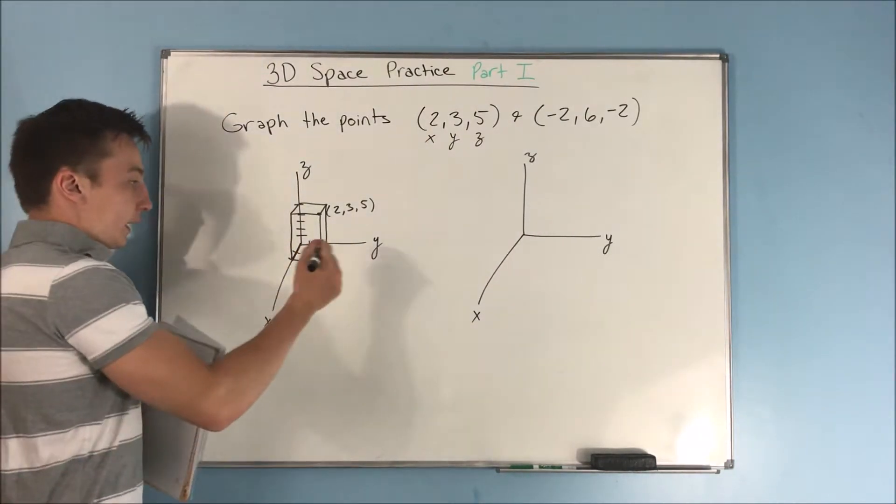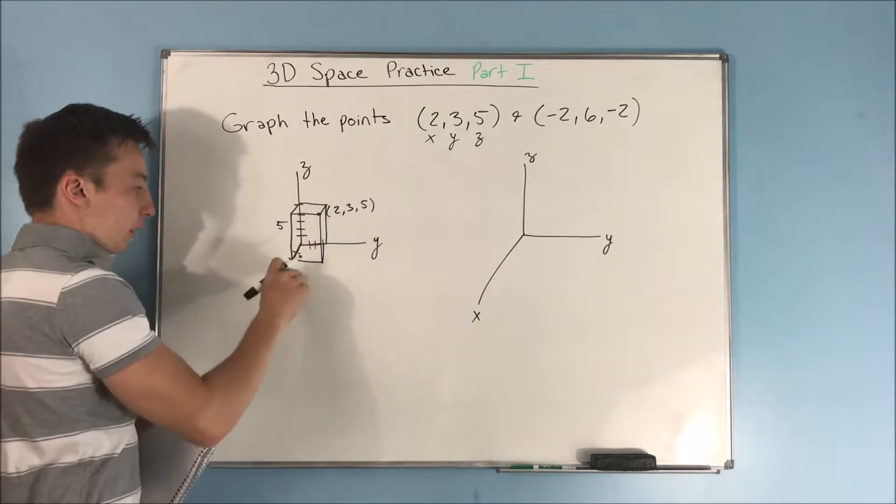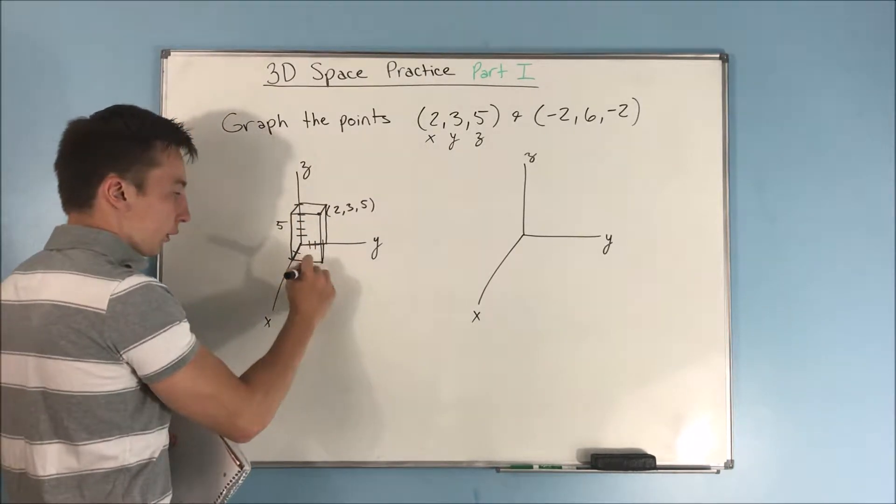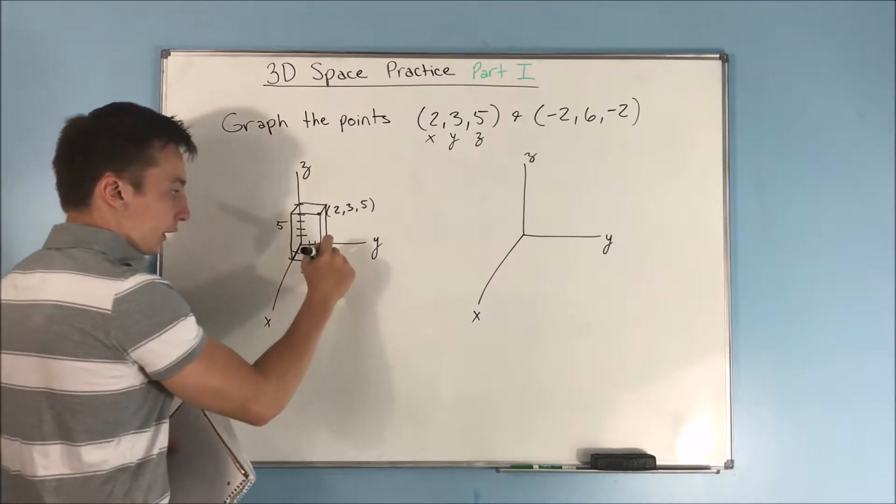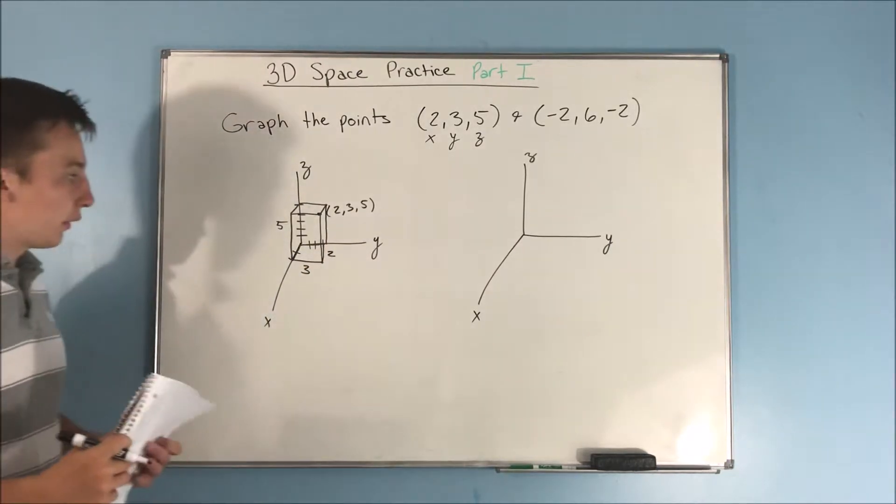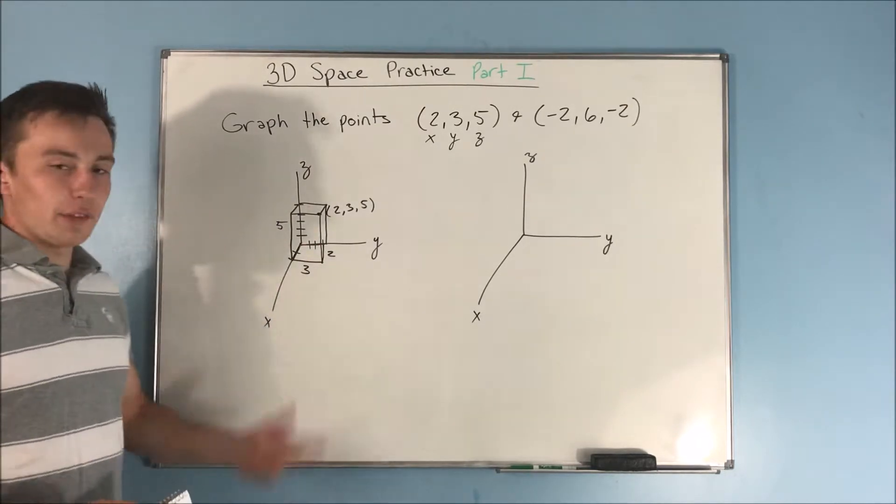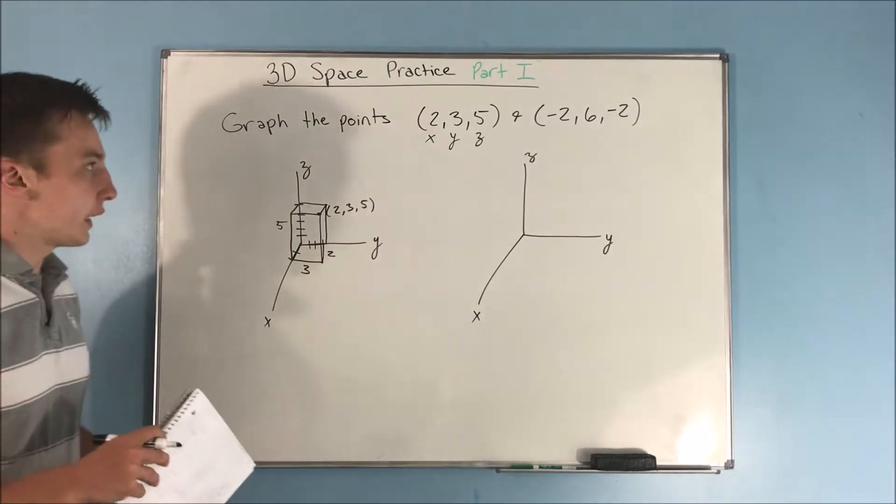And you can see that our height is 5. This dimension over here in the y direction is 3. And in the x direction it's 2. So you can kind of see how we're actually graphing a point like that. It's just kind of cool to see, I guess.